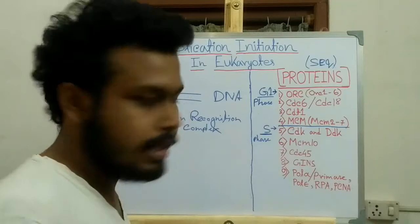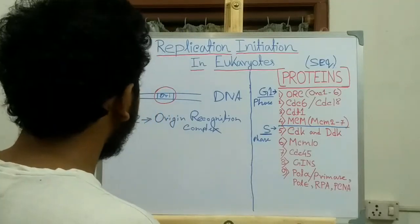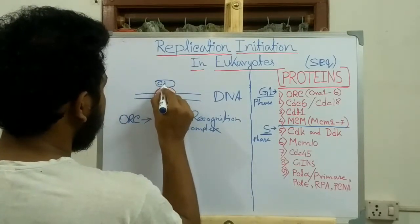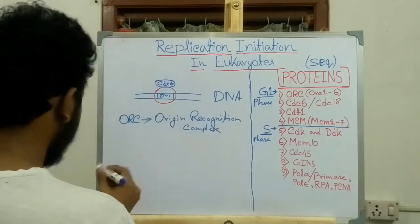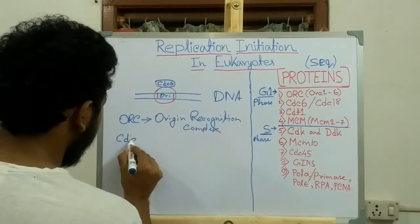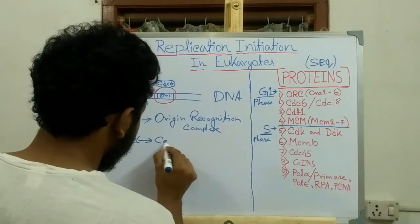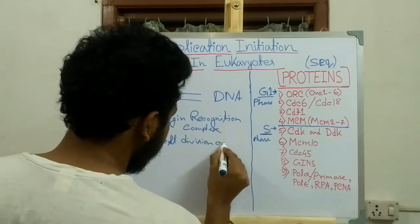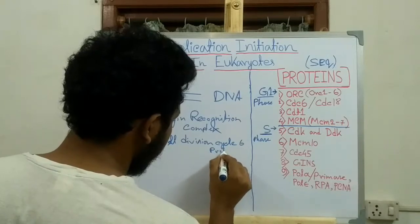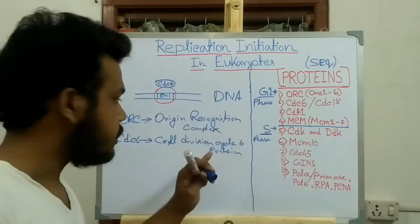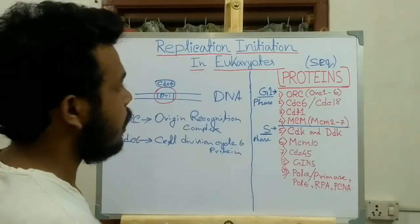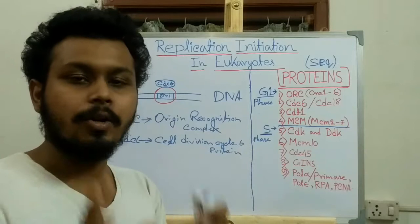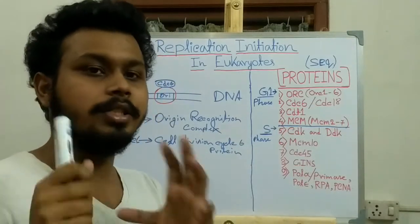The second protein is CDC6. CDC6 binds to ORC. CDC6 is the cell division cycle 6 protein. CDC6 and CDC18 are the same protein, but CDC6 is present in Saccharomyces cerevisiae and CDC18 is present in Saccharomyces pombe.